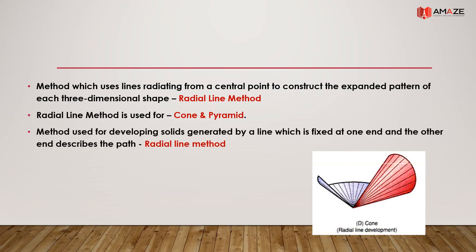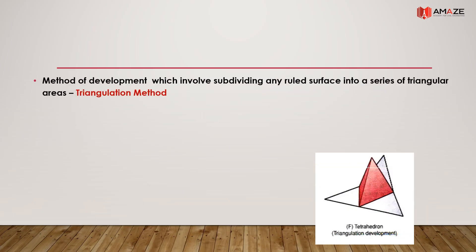The radial line method is used for developing solids generated by a line which is fixed at one end while the other end describes a path — for example, a cone. The method of development which involves subdividing any ruled surface into a series of triangular areas is called the triangulation method. The surface is subdivided into triangular areas to develop the shape.